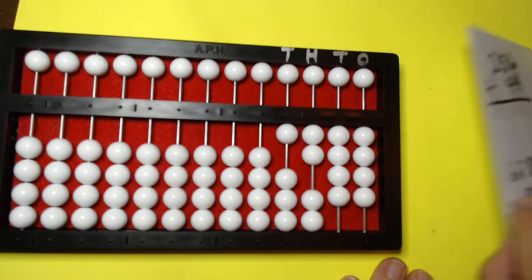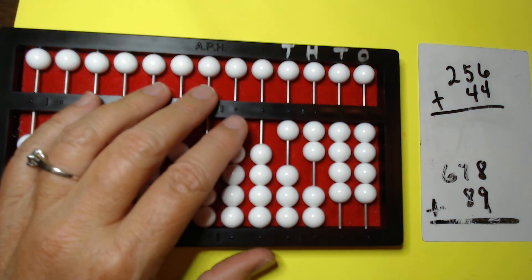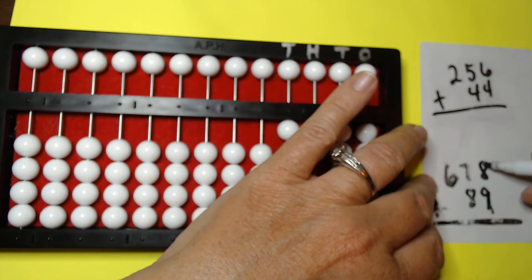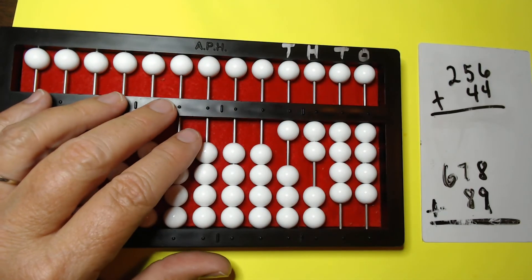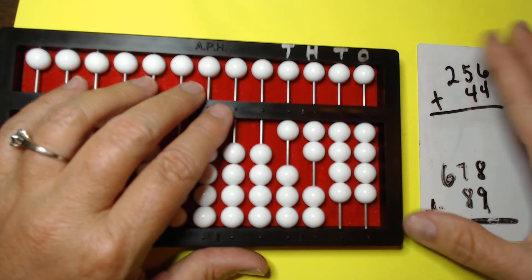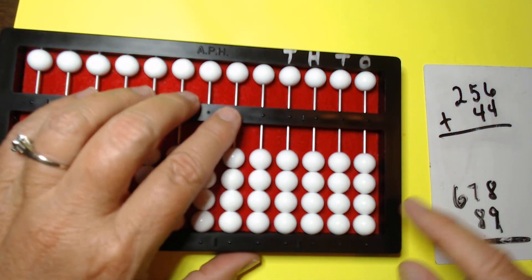Okay. I only have two more problems. By the way, I just took these problems straight off of a third grade math worksheet that I found online that says add three digit numbers in columns with regrouping. All right. So first clear.